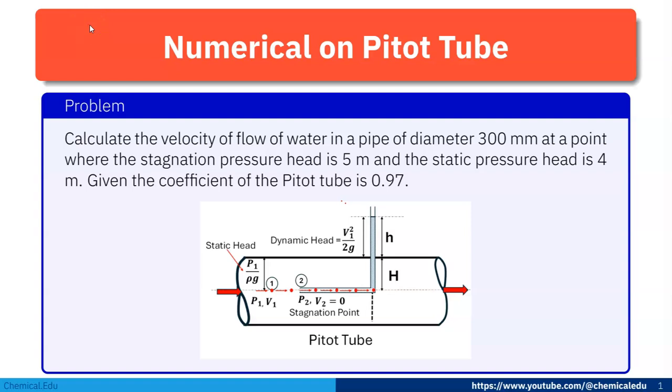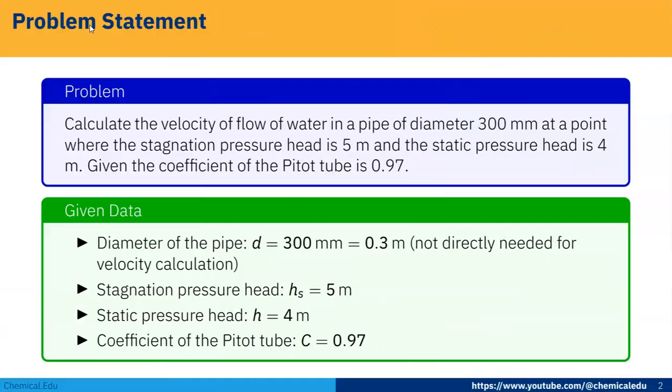Today I'll solve one numerical problem on Pitot tube. Here is the problem statement: calculate the velocity of flow of water in a pipe of diameter 300 mm